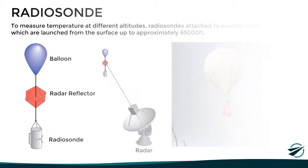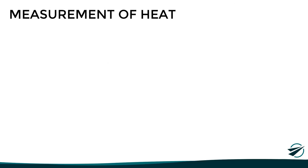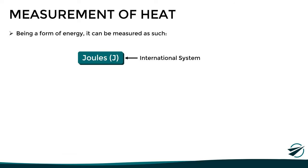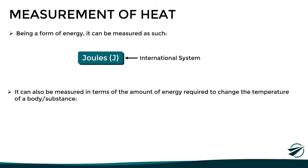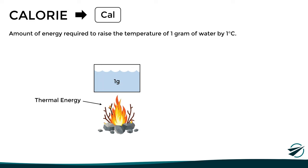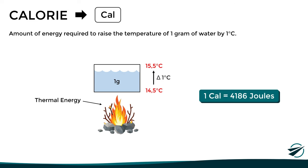So far, we have seen how temperature is measured. Let's now see how we can measure heat. Since heat is a form of energy, it can be measured using joules, which is the standard unit of measurement of the international system. However, in some cases it is more practical to measure it in terms of the amount of energy required to change the temperature of a body or substance, which can be done by means of the calorie. By definition, a calorie is the amount of energy required to raise the temperature of 1 gram of water by 1 degree Celsius — specifically, from 14.5 to 15.5 degrees Celsius under standard conditions at sea level. With all this in mind, 1 calorie is equal to 4,186 joules.